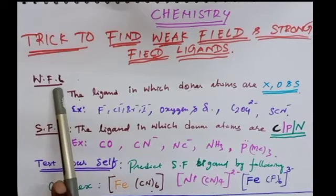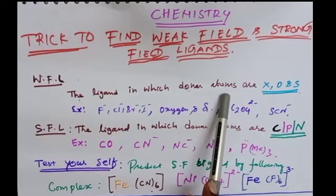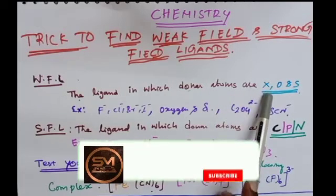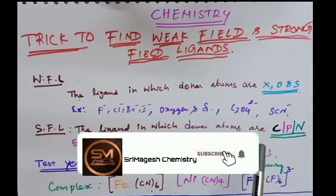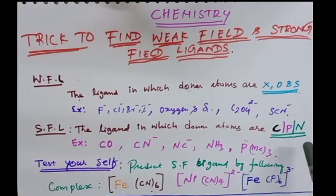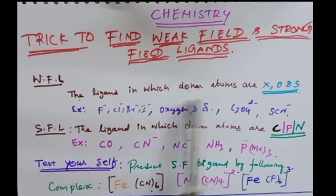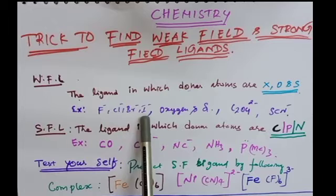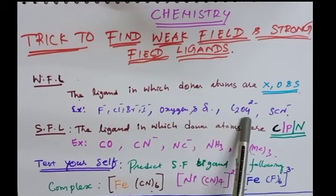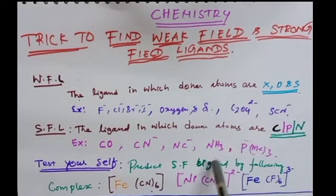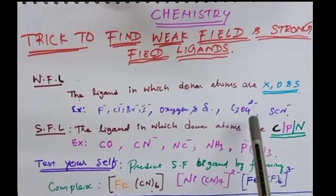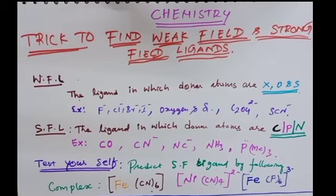Now we are going to see weak field ligands. The ligand in which the donor atom is a halogen, oxygen, or sulfur — these are present in your complex with the central metal atom — that is called a weak field ligand. For example: fluorine, bromine, iodine, oxygen, sulfur, and the oxalate ion. These are examples of weak field ligands.